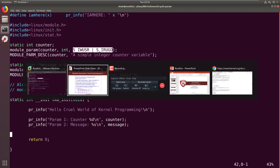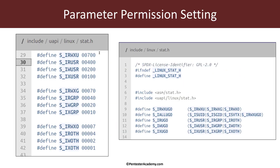Let's understand the permissions. You have the core base permissions: S_IRWXU stands for read, write, execute for user. Another option is S_IRUSR for read user, S_IWUSR for write user, and S_IXUSR for execute user. Similarly we have read, write, and execute for the group, and read, write, and execute separately for others. We can take different combinations and create things like read, write, execute for user, group, and others using OR between all of these. These are located in include/uapi/linux/stat.h at line 30.